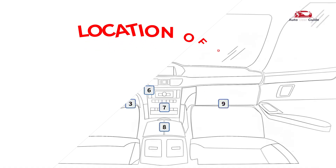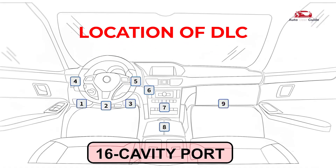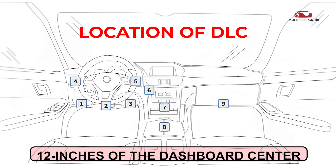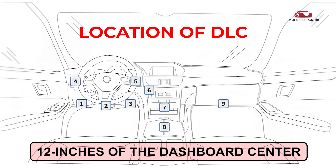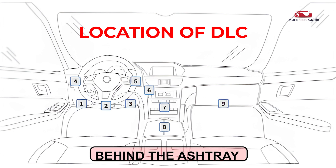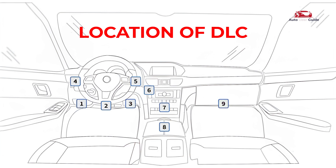The data link connector is a 16-cavity port for connecting diagnostic tools to the vehicle's computer. It is typically found within 12 inches of the dashboard center on the driver's side. Some models may have it behind the ashtray or labeled elsewhere.